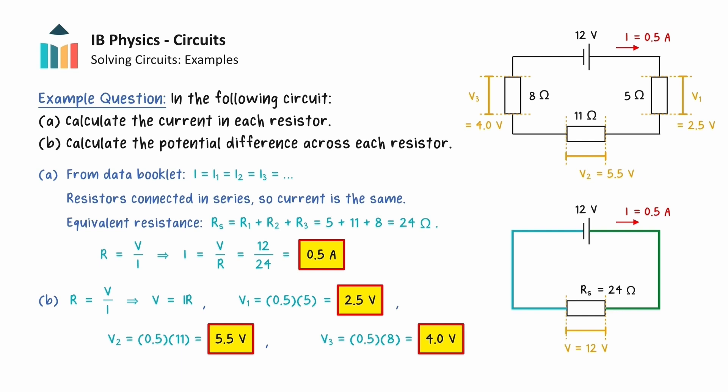We can verify that these answers are suitable because the sum of these potential differences is equal to the voltage of the cell. This expression is equivalent to the loop rule, and we are shown that energy is conserved.